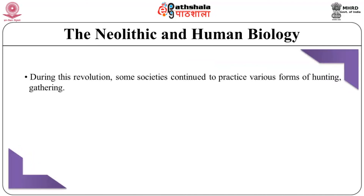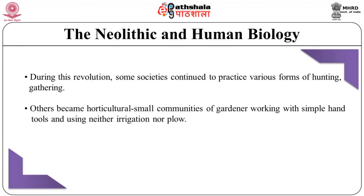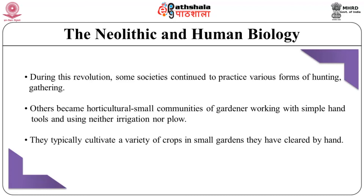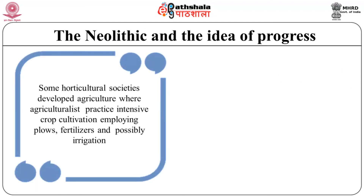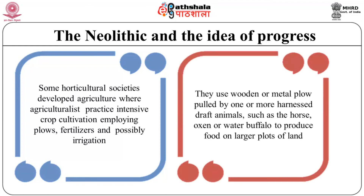During this revolution, some societies continued to practice various forms of hunting and gathering, while others became horticultural — small communities of gardeners working with simple hand tools, using neither irrigation nor plows, cultivating a variety of crops in small hand-cleared gardens. Some horticultural societies developed agriculture, where agriculturists practice intensive crop cultivation employing plows, fertilizer, and possibly irrigation, using wooden or metal plows pulled by draft animals such as horses, oxen, or water buffalo to produce food on larger plots of land.